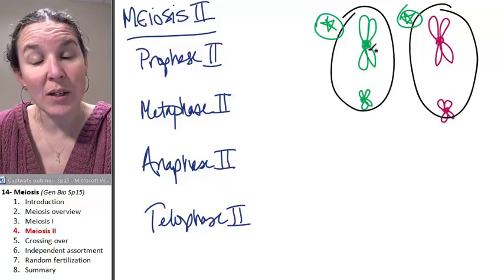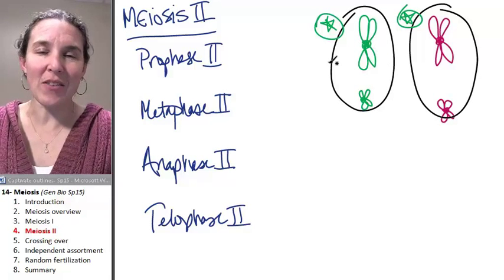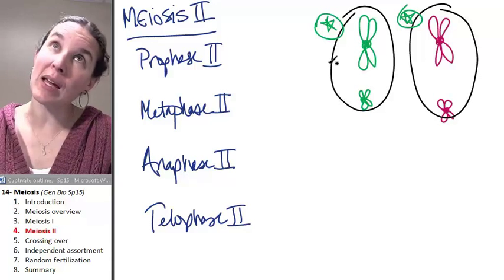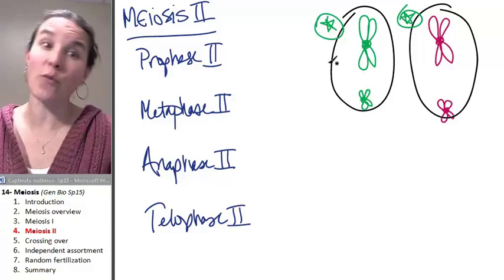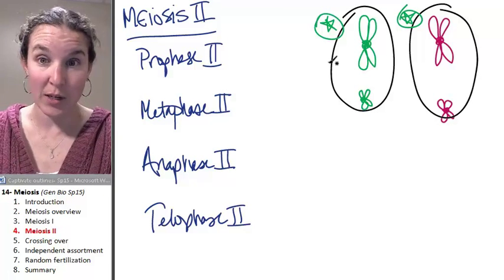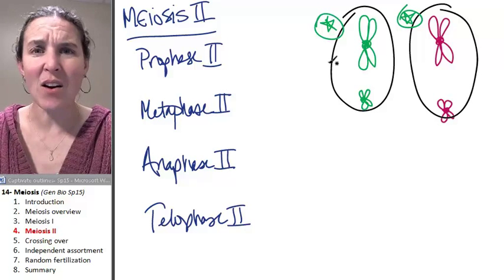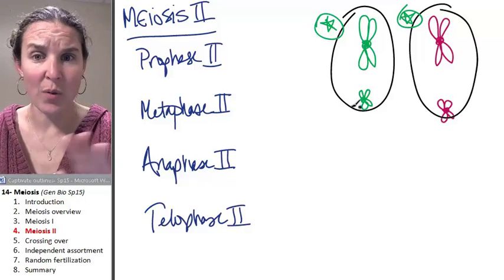So prophase II, if we don't have everything condensed, we condense it. If we made a nuclear envelope, we dissolve it. If we have a nucleolus, we undo it. But sometimes all that stuff is already done.